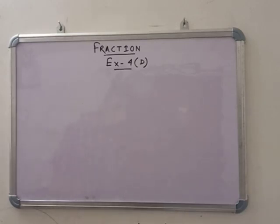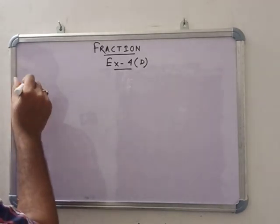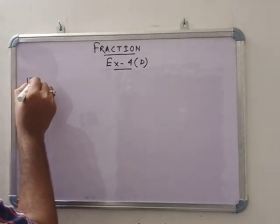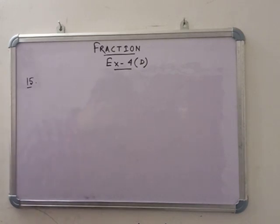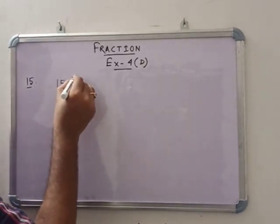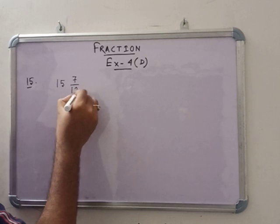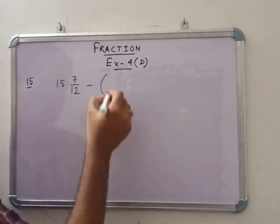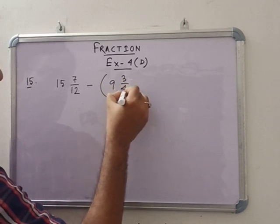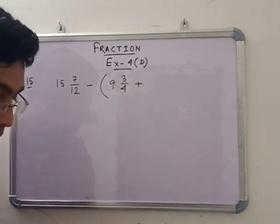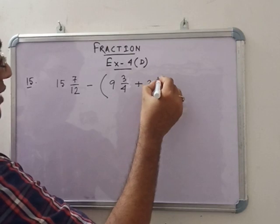Today, we are going to discuss from exercise 14D, number 15. See that: subtract the sum of 9 and 3 by 4 and 3 and 5 by 6 from 15 and 7 by 12. That means 15 and 7 by 12 minus the quantity 9 and 3 by 4 plus 3 and 5 by 6.